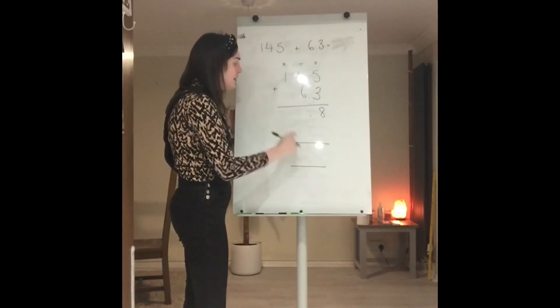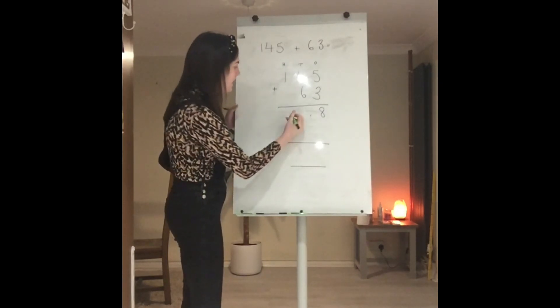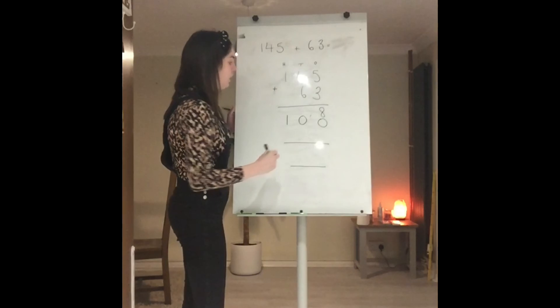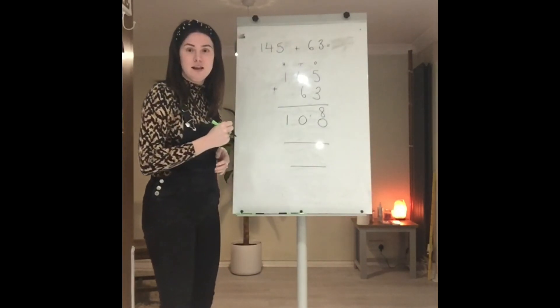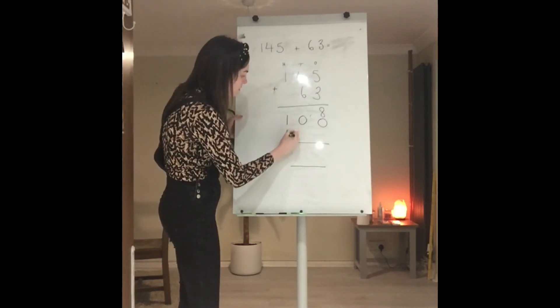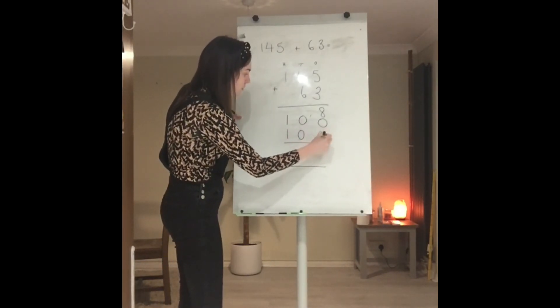I need to make sure I've got all my digits in the right place when I write in my 100. Now I've got this digit left here, this is my hundreds column, so I know, again, it's 100.